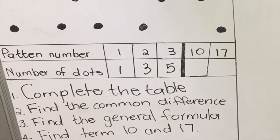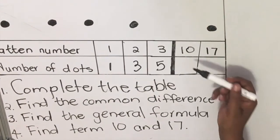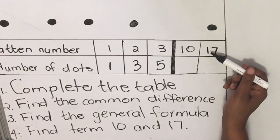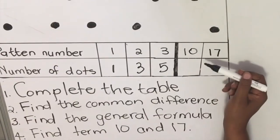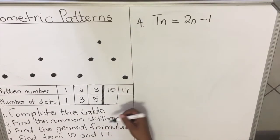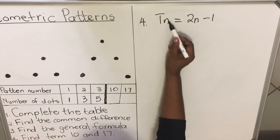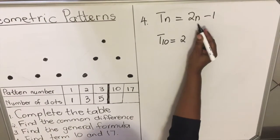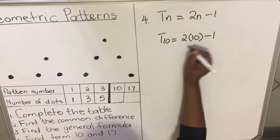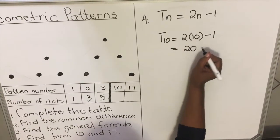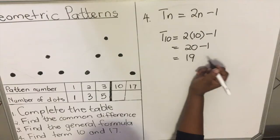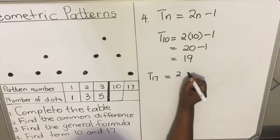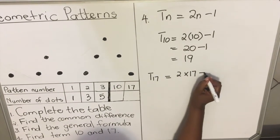Now we use the general formula to find the tenth and seventeenth terms. For T10: substitute n = 10 into Tn = 2n − 1. That gives two times ten minus one, which is twenty minus one, equals nineteen. So in the tenth term, you have 19 dots. For T17: two times seventeen minus one equals thirty-four minus one.